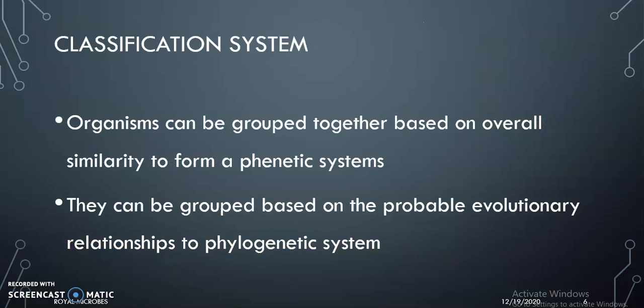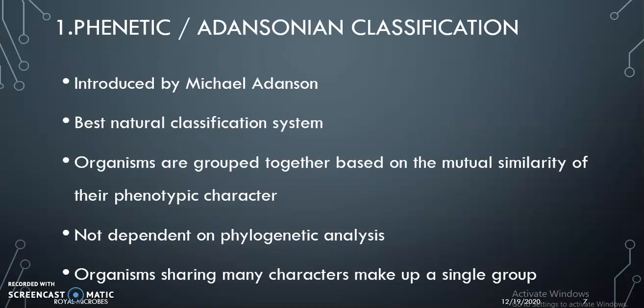The classification system: organisms can be grouped together based on either similarities — that is, overall similarities to form a phenetic system — or based on probable evolutionary relationships to form a phylogenetic system. The first system is phenetic or Adansonian classification, introduced by Michael Adanson. It is the best natural classification system. Grouping is done based on mutual similarity of phenotypic characters, with no phylogenetic analysis. Organisms sharing many characters are grouped in a single group.